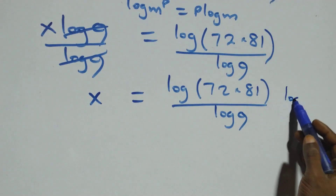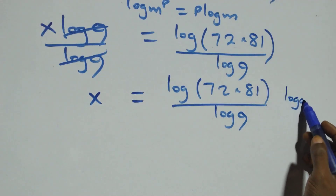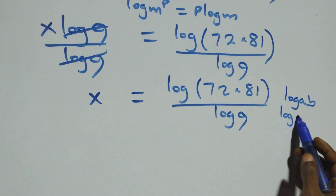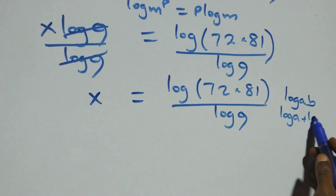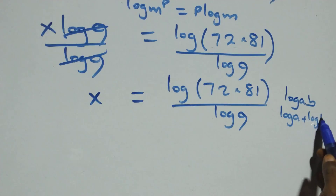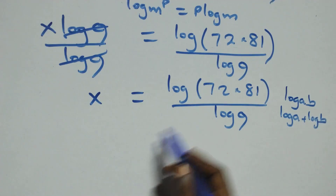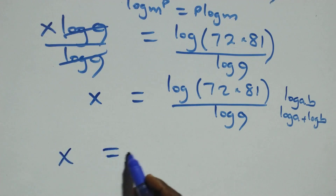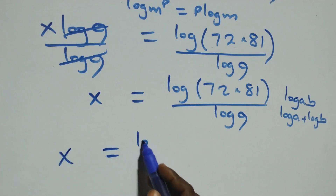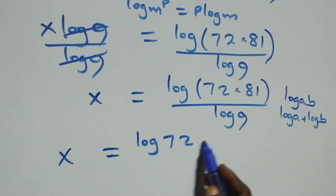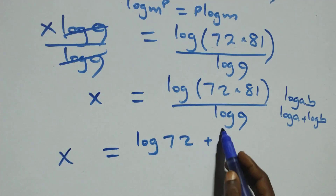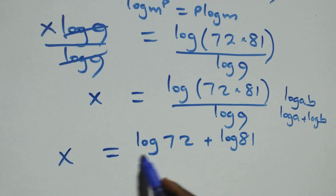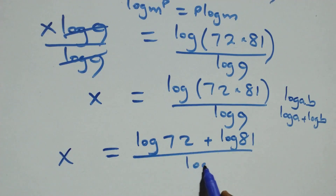This follows from the rule: when we have log of a times b, we can express this as log a plus log b. So we have x equals log 72 plus log 81, all over log 9.